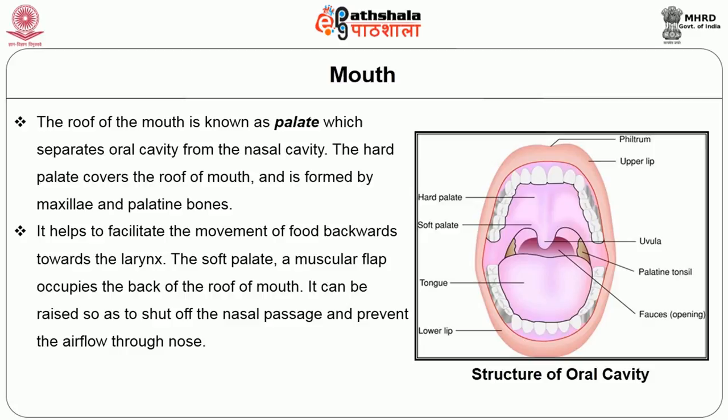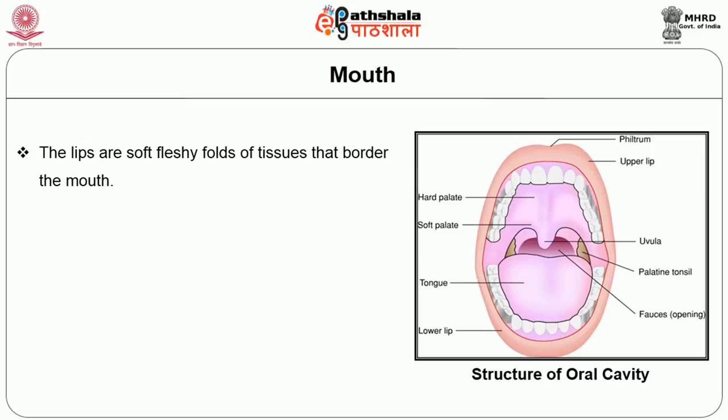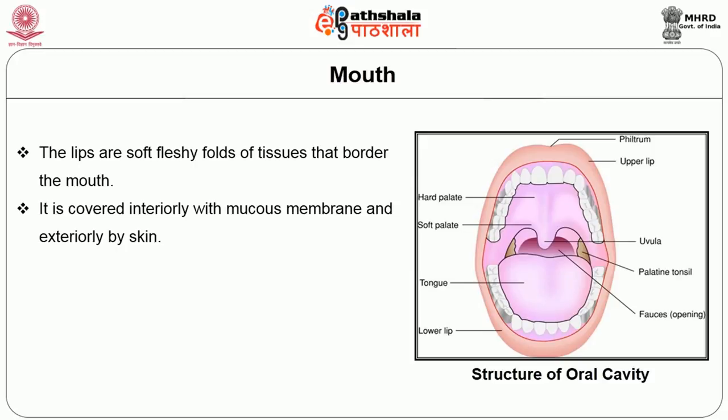The soft palate, a muscular flap, occupies the back of the roof of the mouth. It can be raised so as to shut off the nasal passage and prevent airflow through the nose. At the base of the soft palate is the uvula, which prevents swallowed food from passing into the nasal cavity. The lips are soft, fleshy folds of tissue that border the mouth, covered interiorly with mucous membrane and exteriorly by skin.